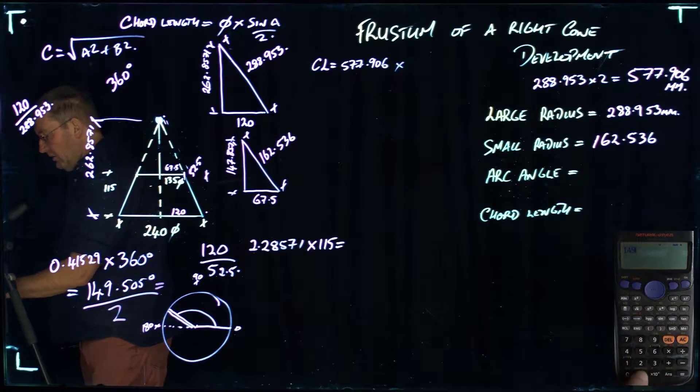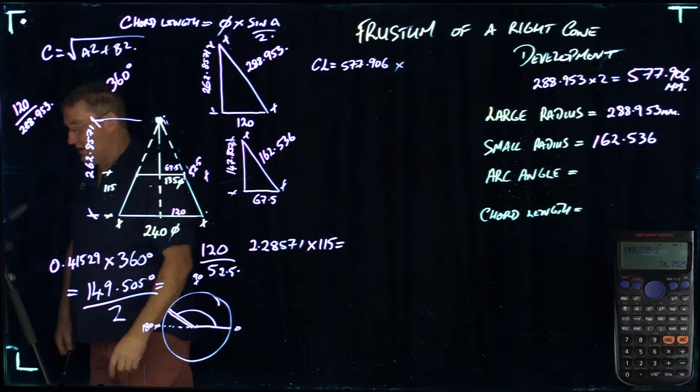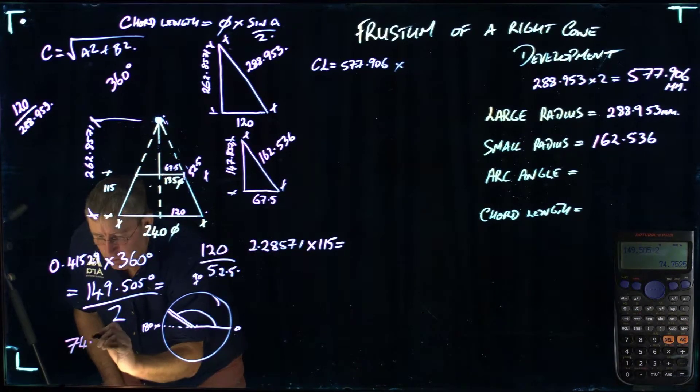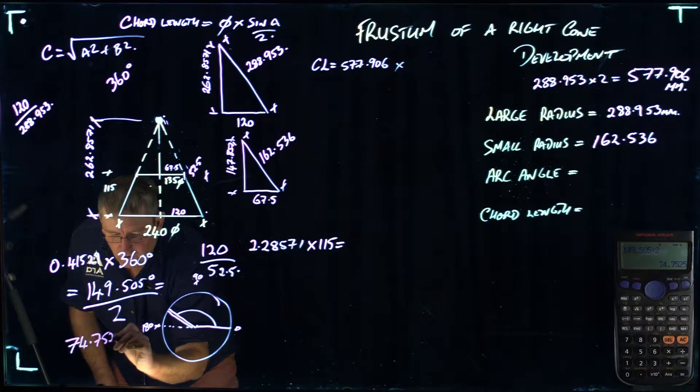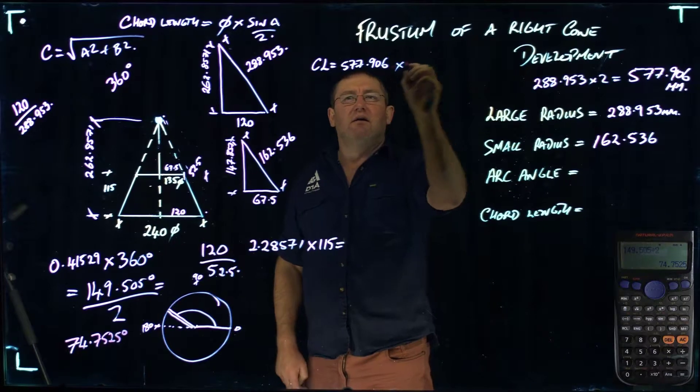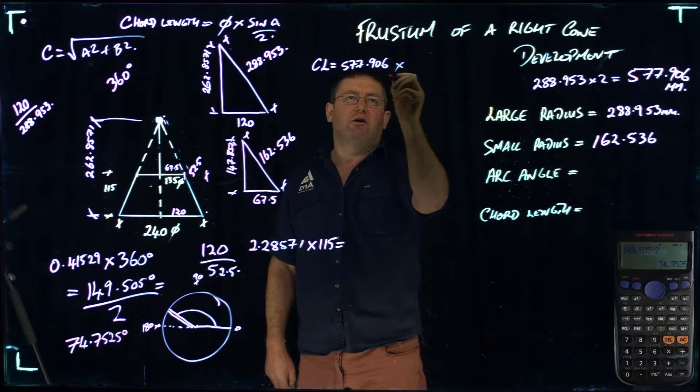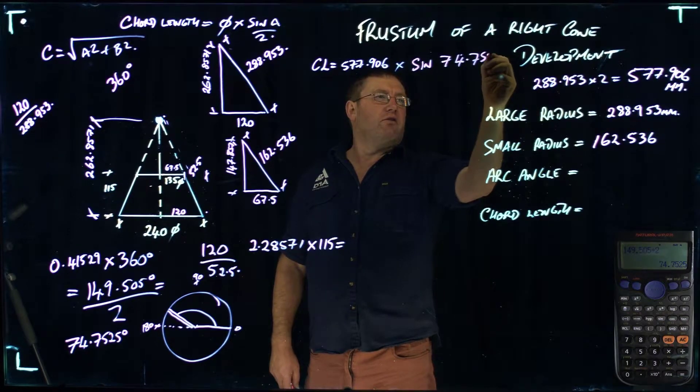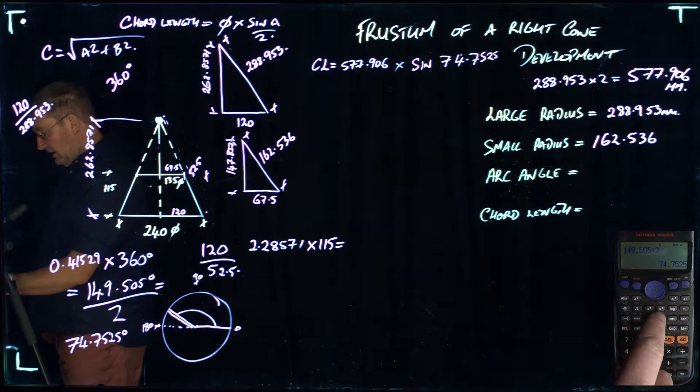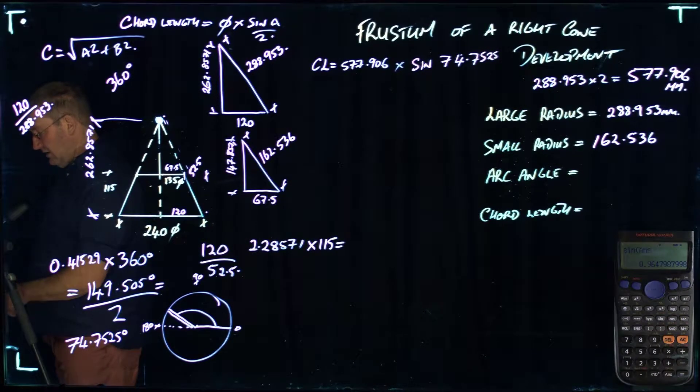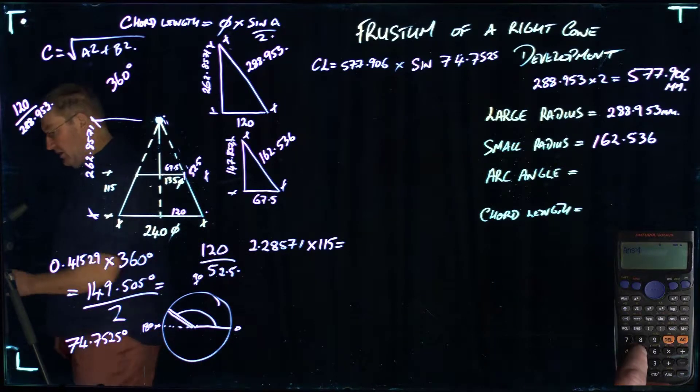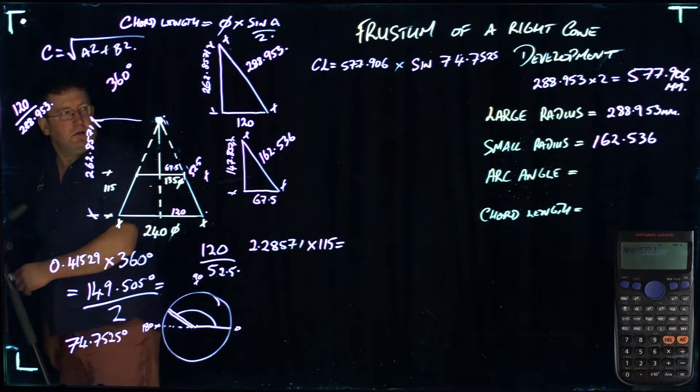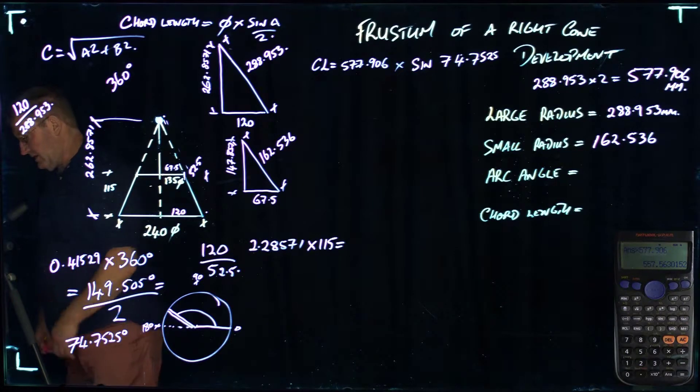On the calculator, I've got 149.505 divided by 2 equals, so that's 74.7525 degrees. Chord length equals the diameter which is 577.906 times sine 74.7525. If I push the sine figure for that number, it gives me 0.96479. And then if I times that by the diameter of 577.906, I get a chord length.